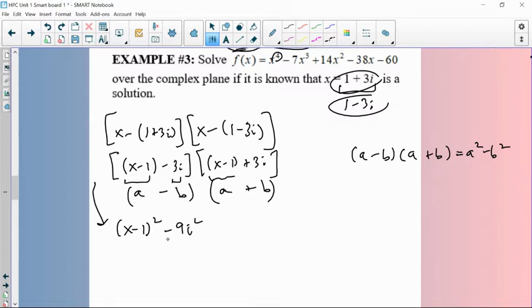So I'll go ahead and make that x minus 1 squared minus 9i squared. And that's always going to be negative, because one's negative, one's positive. But then remember, i squared's a negative 1. So this becomes x minus 1 squared, and then you're going to add 9 more. So go ahead and multiply that out: x squared minus 2x plus 1 plus 9, or x squared minus 2x plus 10.